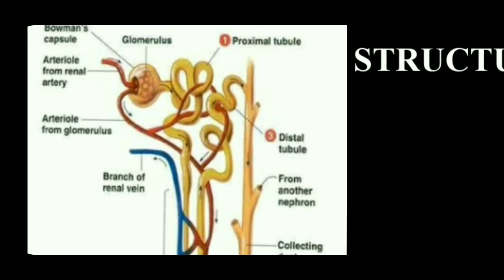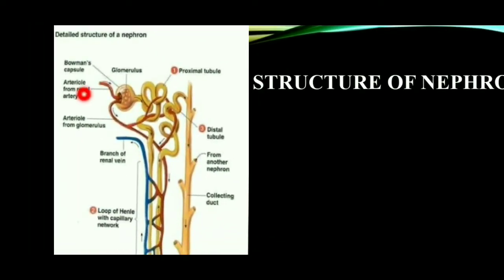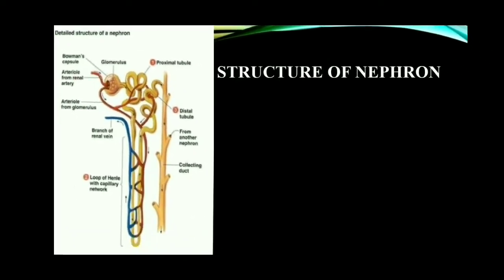The Bowman's capsule continues as the renal tubule. So the nephron is the structural and functional units of kidney, consisting of two parts: renal corpuscle and renal tubule. The renal corpuscle is the first part of the nephron, consisting of the cup-shaped Bowman's capsule made up of a single layer of epithelial cells with minute pores, and within it the glomerulus — a network of blood capillaries formed by the afferent arteriole. The efferent arteriole leaves the glomerulus and connects with all other parts of the nephron.